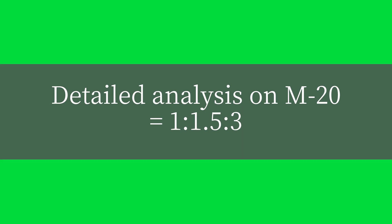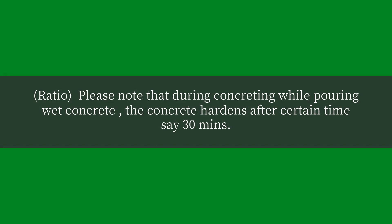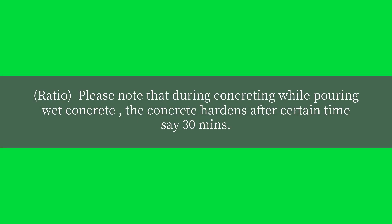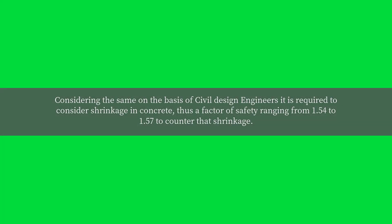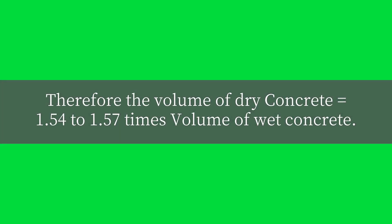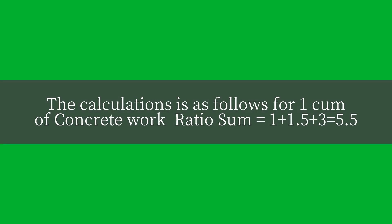Detailed analysis on M20, which equals 1:1.5:3 ratio. Please note that during concreting, while pouring wet concrete, the concrete hardens after a certain time, say 30 minutes. Considering this, civil design engineers require a shrinkage factor ranging from 1.54 to 1.57 to counter that shrinkage. Therefore, the volume of dry concrete equals 1.54 to 1.57 times the volume of wet concrete.